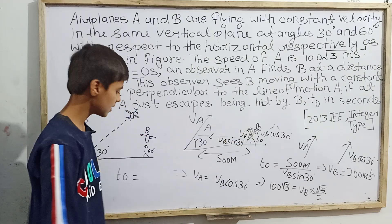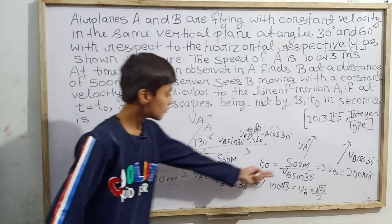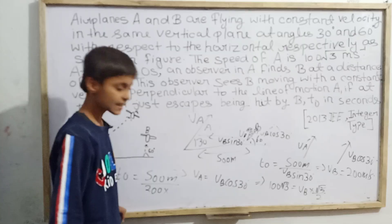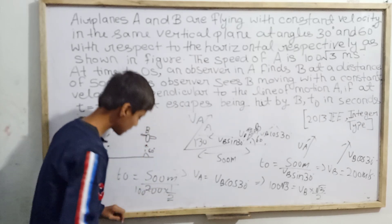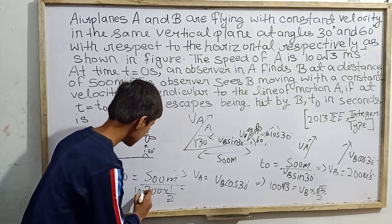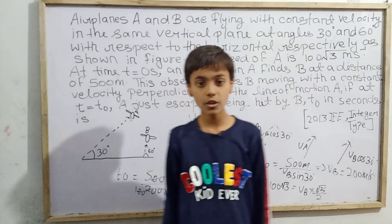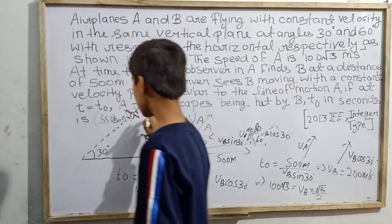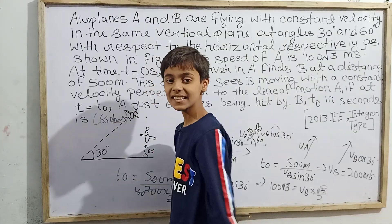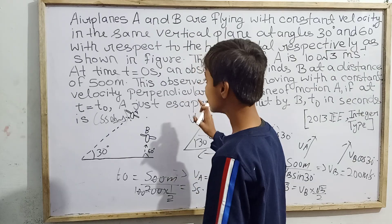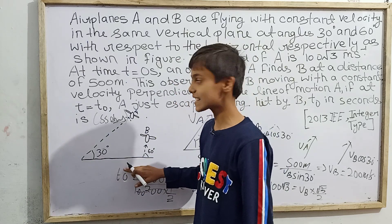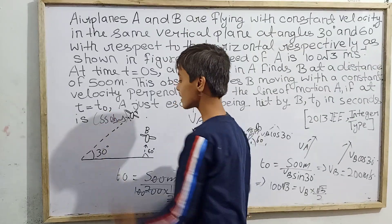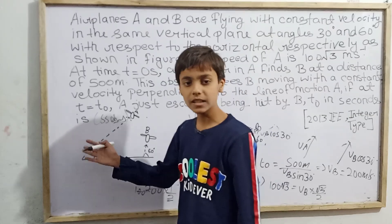Now we can solve for t₀. It equals 500 meters divided by vB·sin30°, which is 200 × (1/2) = 100. So t₀ = 500 / 100 = 5 seconds. The value of t₀ is 5 seconds. Airplane A makes 30 degrees, airplane B makes 60 degrees, speed of A is 100√3 m/s, initial distance is 500 meters, and the observer in plane A is hit by plane B at t₀ = 5 seconds.